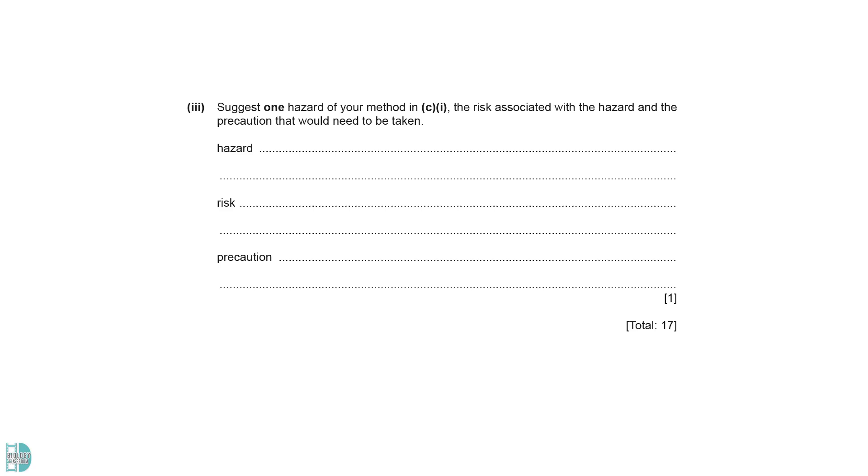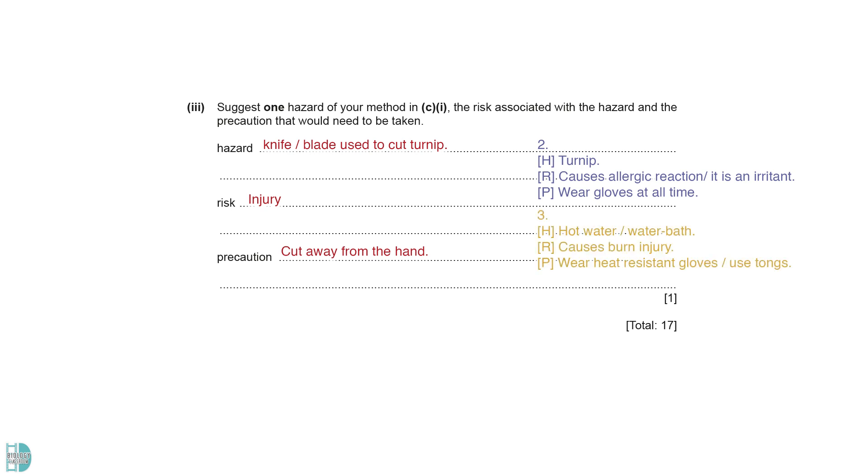Part 3 asks about the risk assessment. The knife used to cut the turnip may cause injury. We should cut it away from the hand to prevent this. The specimen may contain substances that cause allergic reactions in some. We should wear gloves while handling it. Lastly, hot water may lead to a burn injury. Heat-resistant gloves should be used throughout the investigation.